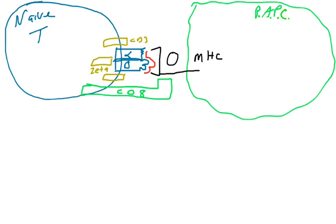Now let's say the same T-cell looks at another MHC presenting a different peptide. The CD8 protein binds the MHC molecule, the alpha and beta chains bind the MHC molecule, and this time the shape of the peptide matches the shape of the T-cell receptor. There is now a very strong affinity between the T-cell receptor complex and the MHC-peptide molecule. This creates a T-cell synapse — an extremely tight, extremely high affinity complex. The T-cell receptor has high affinity for this peptide loaded on MHC, so we've found a match, and we need to convert this naive T-cell to an activated T-cell.